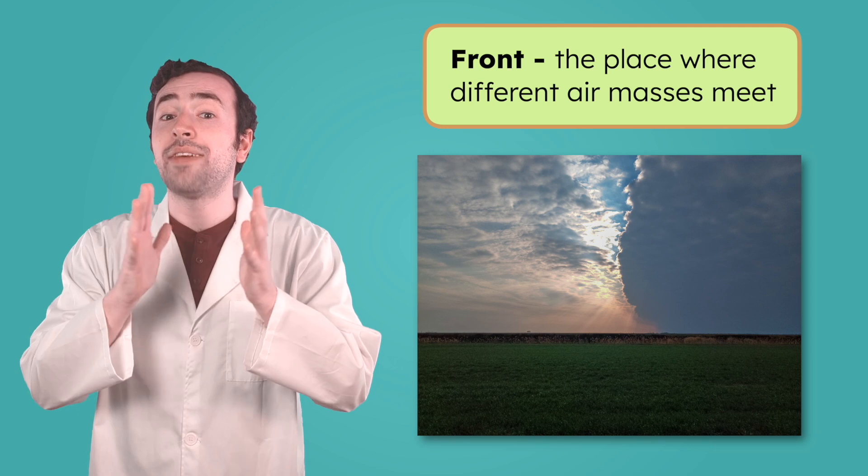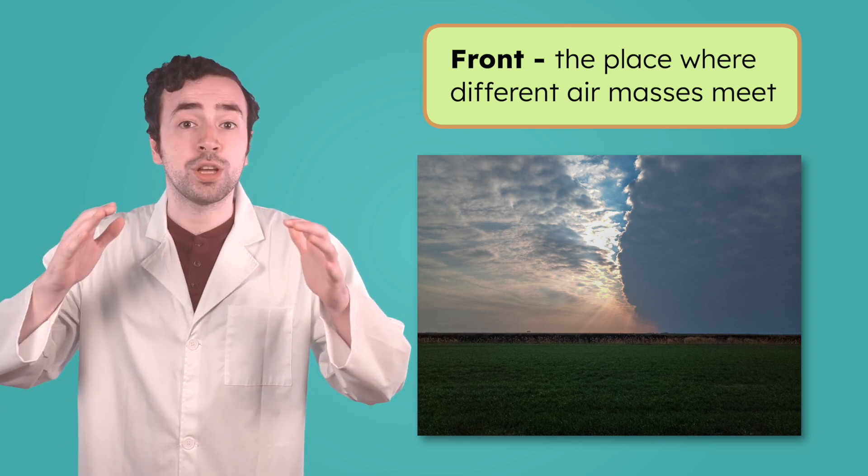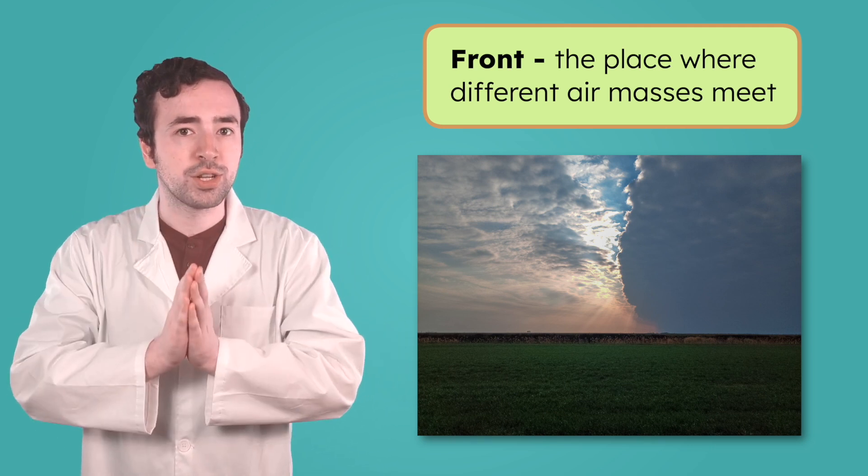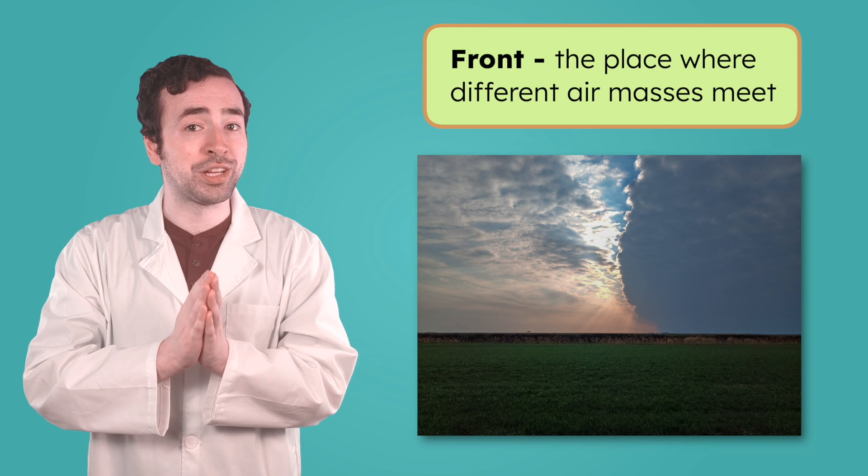What do you think happens when two different air masses meet? They don't mix together easily. Instead, they push against each other, and the place where they meet is called a front. Fronts are where a lot of weather changes happen.